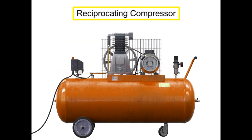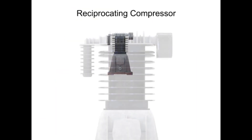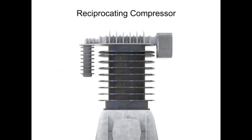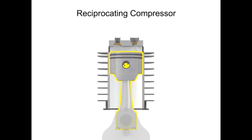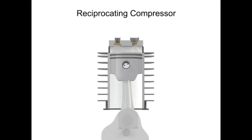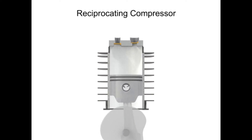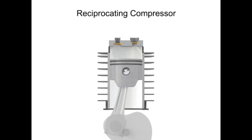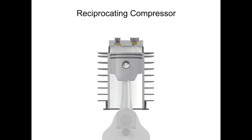A typical reciprocating compressor consists of a housing with an internal piston connected to a crankshaft. As the crankshaft turns, a piston reciprocates within the cylindrical housing. There are two valves at the head of the cylinder, an inlet and an outlet.